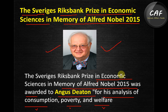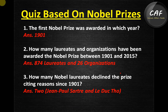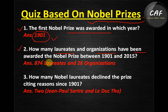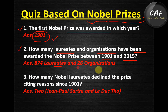Now for the static trivia quiz on Nobel Prize history. Question 1: The first Nobel Prize was awarded in 1901. Question 2: How many laureates and organizations have been awarded the Nobel Prize between 1901 and 2015? The answer is 874 laureates and 26 organizations.